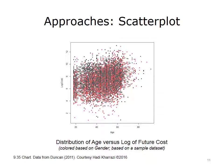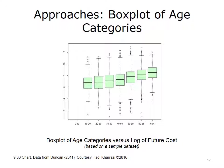Scatter plots are extremely useful in visualizing the relationship of two variables, especially when both variables are numeric and continuous. This scatter plot shows the relationship between age and log-transformed cost. Each point on this scatter plot shows one patient of the selected population cohort extracted from a large claims database. Note that genders are also represented by different colors in the scatter plot. Box plots can also show the spread of a grouped variable against a continuous variable. The box plots on this slide show the distribution of log-transformed cost in each of the given age groups. The box plots show that higher age groups seem to have higher costs overall. However, the statistical significance of such a relationship should be established using appropriate statistical methods.